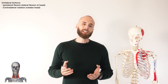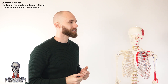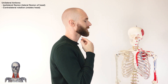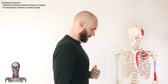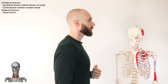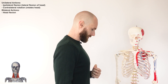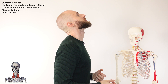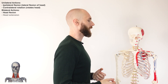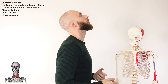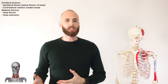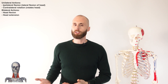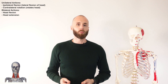Let's take a look at bilateral contraction next. When both sides of the muscle contract, that's going to tilt the head forward, resulting in flexion of the neck. But it can also cause extension of the neck as well. How does it achieve these two contrary actions from the same muscle?